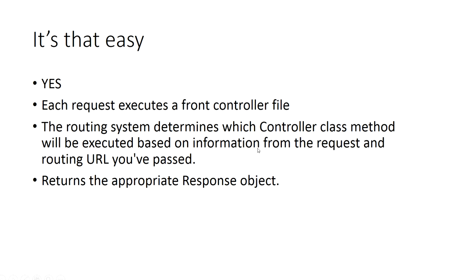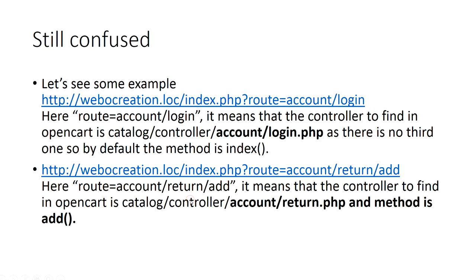Each request executes a front controller file. The routing system determines which controller class methods will be executed based on the information from the request and routing URLs, and it returns the appropriate response object. For example, in the URL where route equals to account/login, the controller to find in OpenCart is at catalog/controller/account/login.php. As there is no third parameter, by default the method is index.